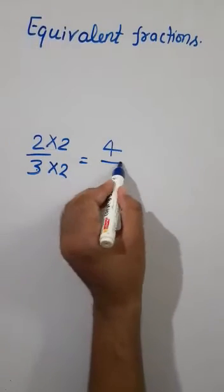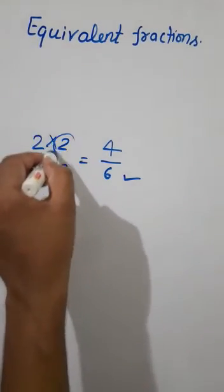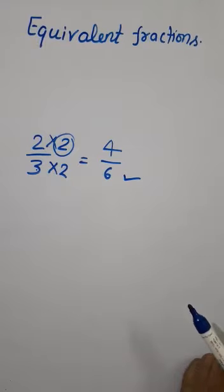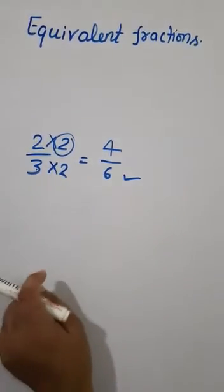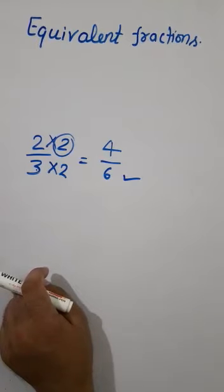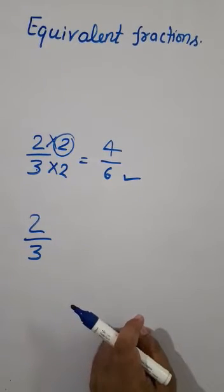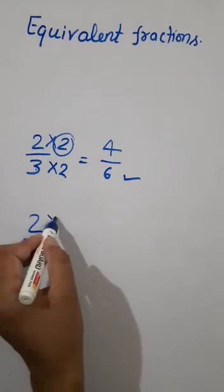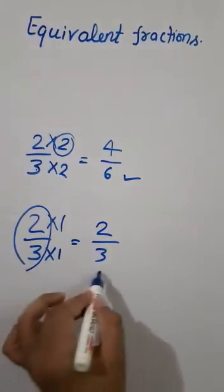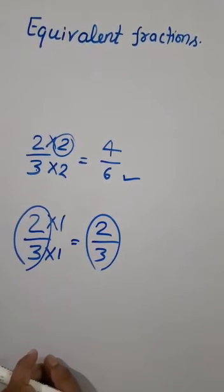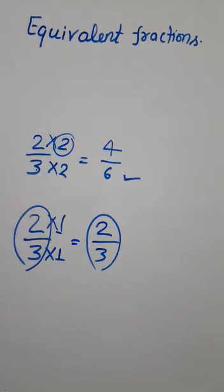So 2 × 2 = 4 and 3 × 2 = 6, giving us 4/6 as the required answer. Now the question is: why did I multiply by 2 and not by 1? The answer is that whenever we multiply a fraction by 1, there is no change — the fraction remains the same. Let us check: 2/3 multiplied by 1 gives 2/3, which is the original fraction. So when finding an equivalent fraction, we do not multiply by 1.